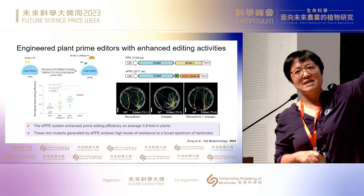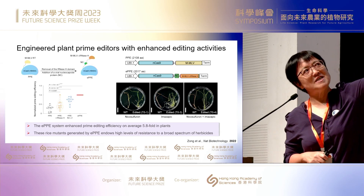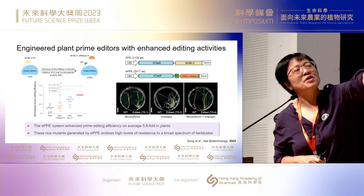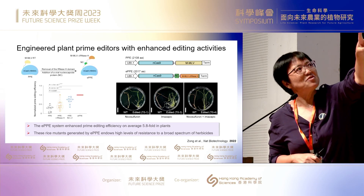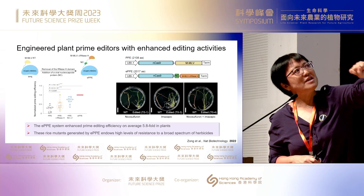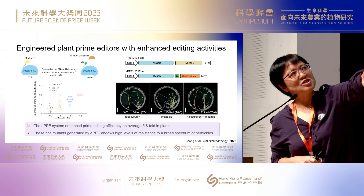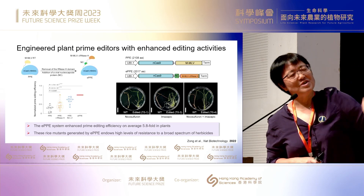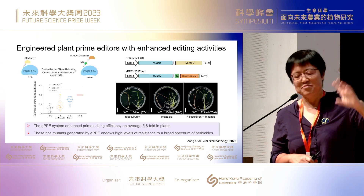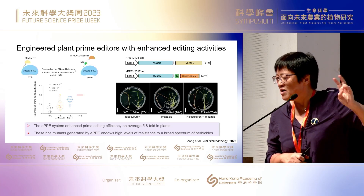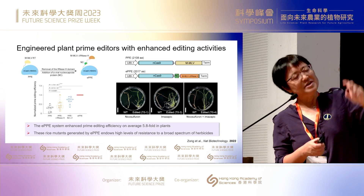Using the EPP system, we were able to generate rice mutants with a high level of resistance to a broad spectrum of herbicides.